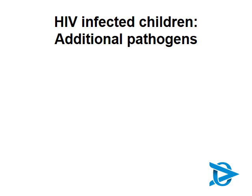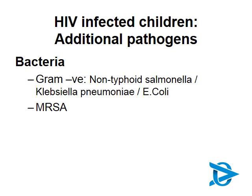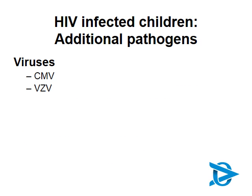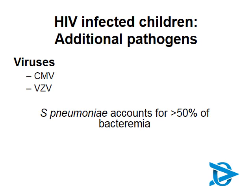When seeing a child with HIV, we also need to consider additional pathogens causing community-acquired pneumonia. From a bacterial standpoint, they can get gram-negative infections or even MRSA if exposed to hospital conditions. Importantly, they also have the possibility of fungal infections, most commonly Pneumocystis jirovecii pneumonia, but Candida can also be a problem. Uncommon viruses such as CMV and varicella zoster virus can also affect the lungs. Streptococcus pneumoniae accounts for more than 50% of bacteremia in HIV-infected children, putting them at higher risk of developing bacterial meningitis following community-acquired pneumonia.